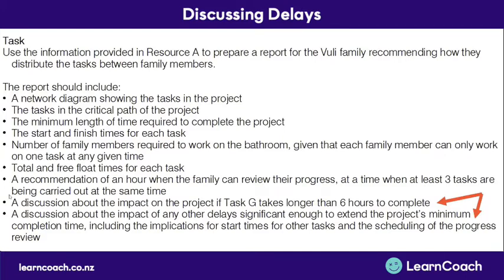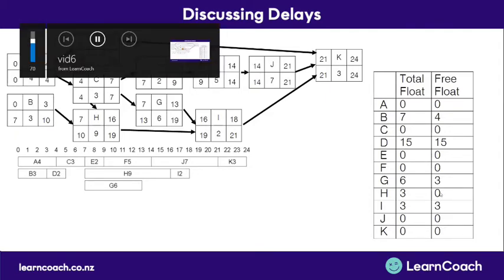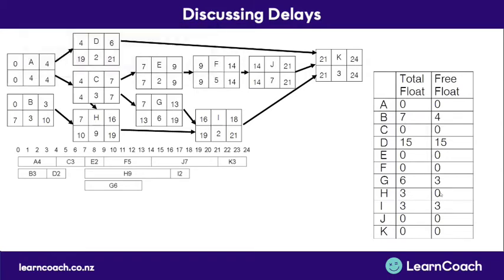We'll start with task G as an example. Total float is the maximum amount of time a task's completion can be delayed without affecting the project's minimum completion time. If we exceed that, we extend the project's completion time and create a new critical task. Letting task G take 13 hours instead of six — delayed by seven hours, exceeding the total float — the path A, C, G, I, K totals 4+3+13+2+3 = 25 hours, which is longer than the project's minimum completion time of 24 hours, making that the new critical path.